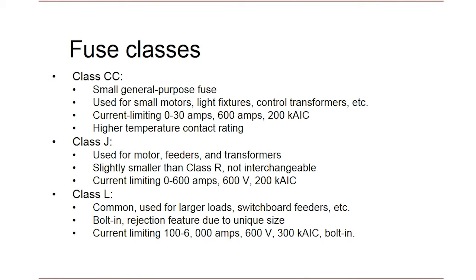There's an incredible variety of fuse classes. Let's focus on the most common ones in low voltage power distribution: classes CC, J, L, R, and T. Class CC fuses are smaller general purpose fuses used for small loads like small motors and control transformers, going up to about 30 amps at 600 volts. They often have a higher contact temperature rating of about 95°C versus the normal 55 to 75°C for other classes. Class J fuses are all-purpose fuses up to 600 amps. They're not interchangeable with any other class — they are physically shorter, so the fuse clips are closer together, making it physically impossible to insert another fuse class.